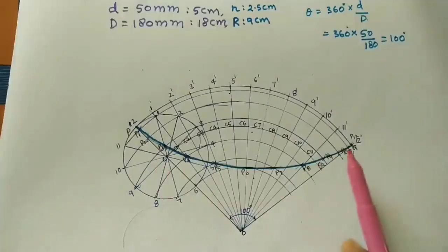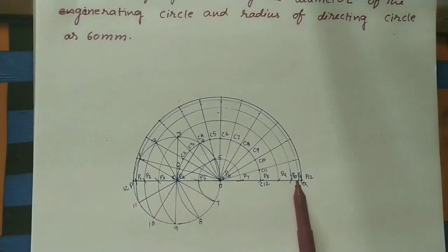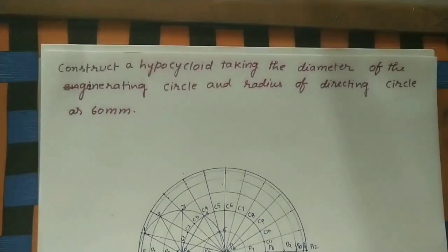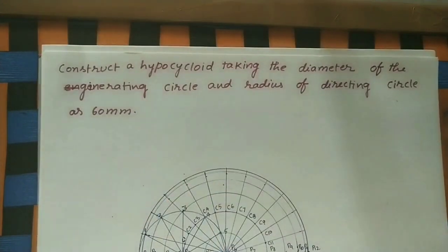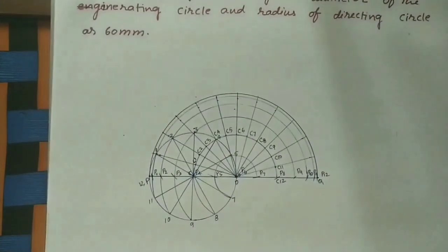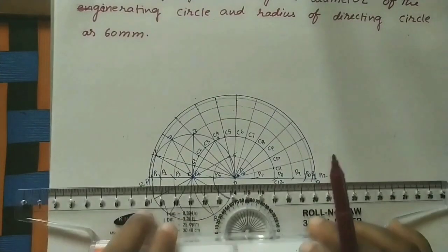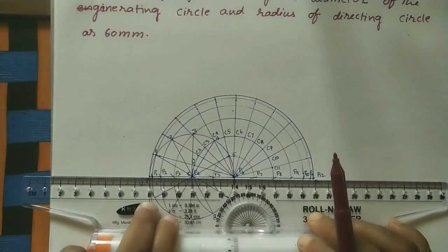This curve is called hypocycloid. All the P points — P and Q are coming on the same straight line. This curve is the hypocycloid, so make it dark. All the initial point, end point, and middle points lie on it, so it is a straight line.